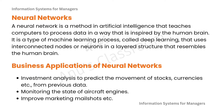A neural network is a method in AI which teaches computers to process data in a way that is inspired by the human nervous system or brain. It is a type of machine learning process called deep learning, which uses interconnected nodes or neurons in a layered structure that resembles the human brain. Basic applications of neural networks include investment analysis to predict the movement of stocks and currencies from previous data, monitoring the state of aircraft engines, and improving market mail shots.